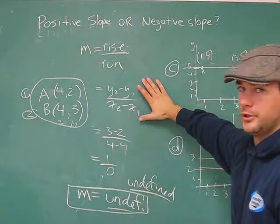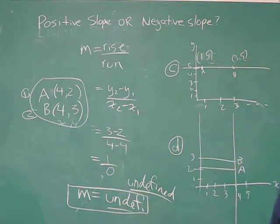when you use the formula, which you're supposed to use every time, equals 0. And if you have a 0 denominator, it's undefined.